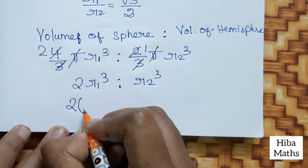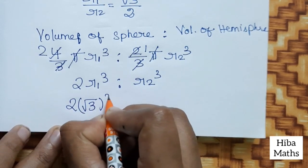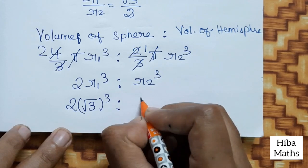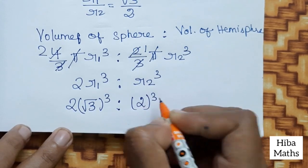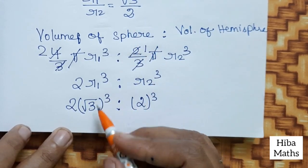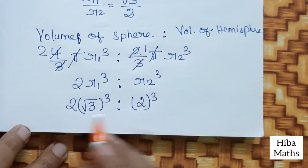2 into R₁ value is √3 whole cube. r₂ value is 2 whole cube. R₁ value is √3 and r₂ value is 2. Now we solve the value of this.